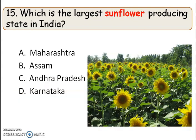Next question: which is the largest sunflower producing state in India? The right answer is option D, Karnataka. Sunflower is a very important oil seed crop, and Karnataka is the largest sunflower producing state. Sunflower can be grown both in kharif as well as rabi season.